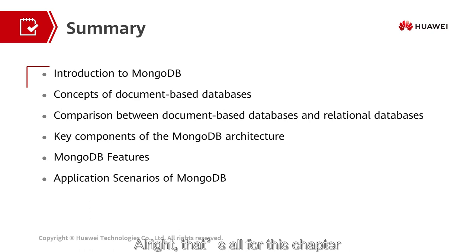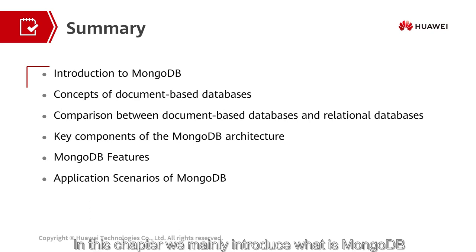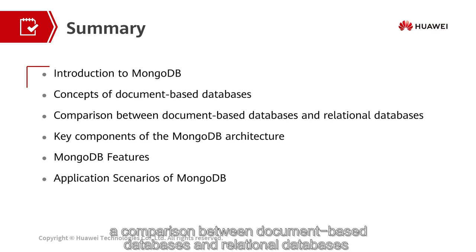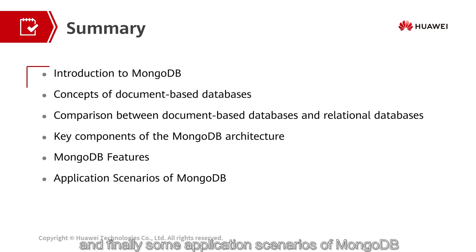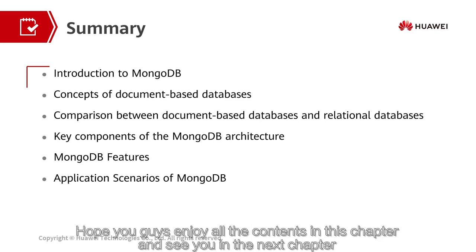That's all for this chapter. In this chapter, we mainly introduced what MongoDB is, some concepts of document-based databases, a comparison between document-based databases and relational databases, key components of the MongoDB architecture and MongoDB features, and finally some application scenarios of MongoDB. Hope you guys enjoy all the contents in this chapter, and see you in the next chapter. Thank you.